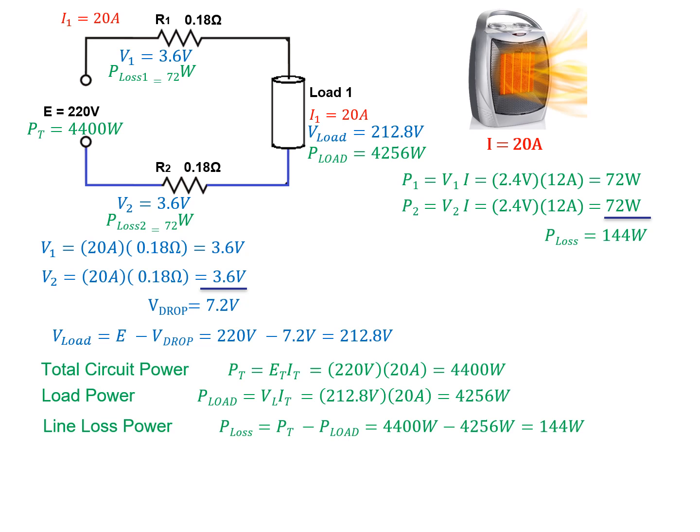Now that we have our input power and our output power, we can calculate our efficiency. Efficiency is equal to power out over power in multiplied by 100 percent, and this circuit as well is running around 96%, but 96.72% to be precise.